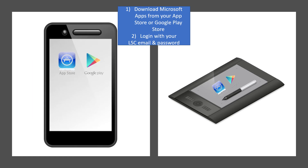To download the Microsoft apps onto your cell phone or tablet, you need to go to your App Store or Google Play Store, find the apps, download them, and then log in with your Lone Star College email address that ends in @my.lonestar.edu and your password to have access to these apps.